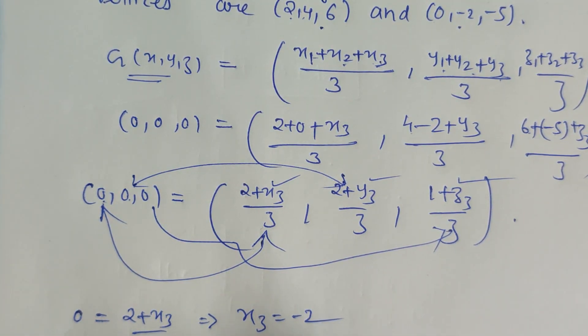And again the third coordinate is 0 when equated with (1+z3)/3, we get z3=-1.